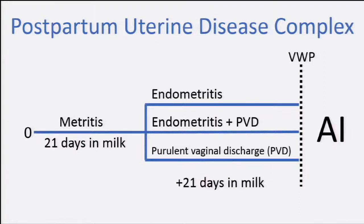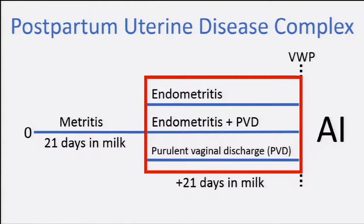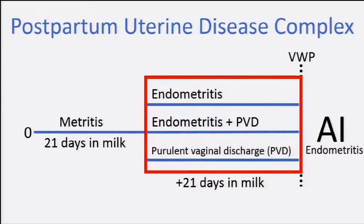After 21 days in milk, you can have other types of disease. You can have endometritis, you can have endometritis and purulent vaginal discharge — which is not called clinical endometritis — or you can have a combination of different diseases. And if this inflammation persists after insemination, we're going to have a decreased conception rate.